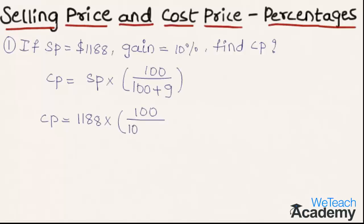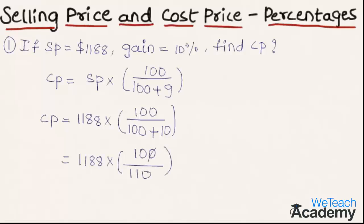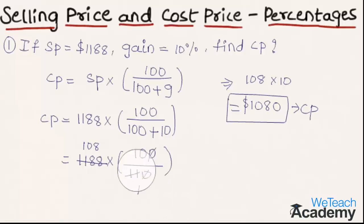Substituting the values: Cost Price = 1188 × 100 ÷ (100 + 10) = 1188 × 100 ÷ 110. Cancelling the zero in the numerator and denominator gives 1188 ÷ 11. Since 11 × 108 = 1188, multiplying the remaining values: 108 × 10 gives the cost price as $1,080.